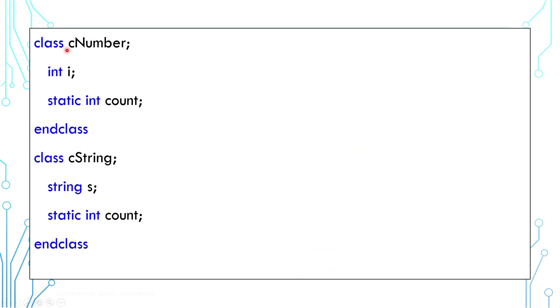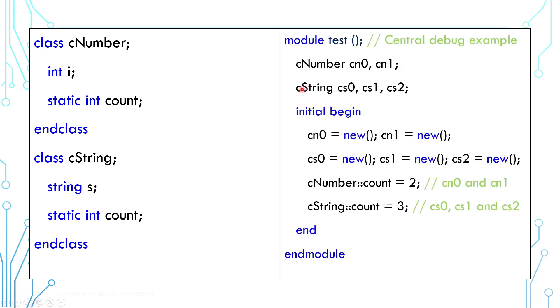Imagine that we have two classes, cNumber and cString, each has one static member count. These two members count are not related. If we instantiate the classes, the count here only affects cNumber instances and the count here only affects cString instances.